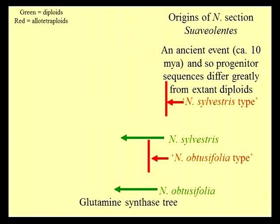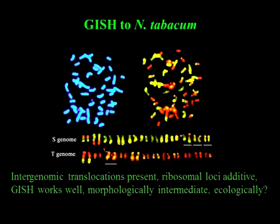We've also been doing GISH and looking at the process of diploidization, chromosome numbers, ribosomal gene number, and all these kinds of things. To show you a little bit: there's tabacum, which is a very recently formed allotetraploid. Using GISH, which works very well, you can see that there are intergenomic translocations between the two — the S and the T genome. The ribosomal genes are exactly what you'd predict from knowing the parental numbers and locations, so it's perfectly additive.